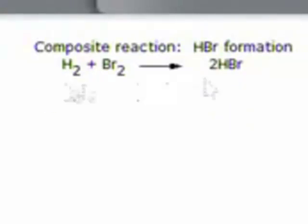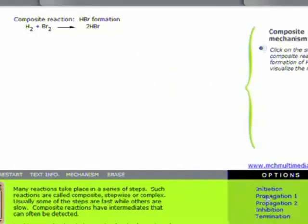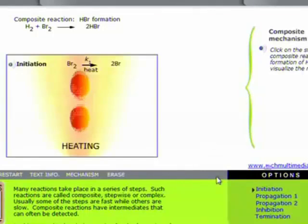This is a mechanism where first of all you initiate it. You initiate either by light or by heat. So when you heat, the first part is there's a certain rate constant - bromine breaks up into two atoms. Those two atoms are not charged, they're just radicals.